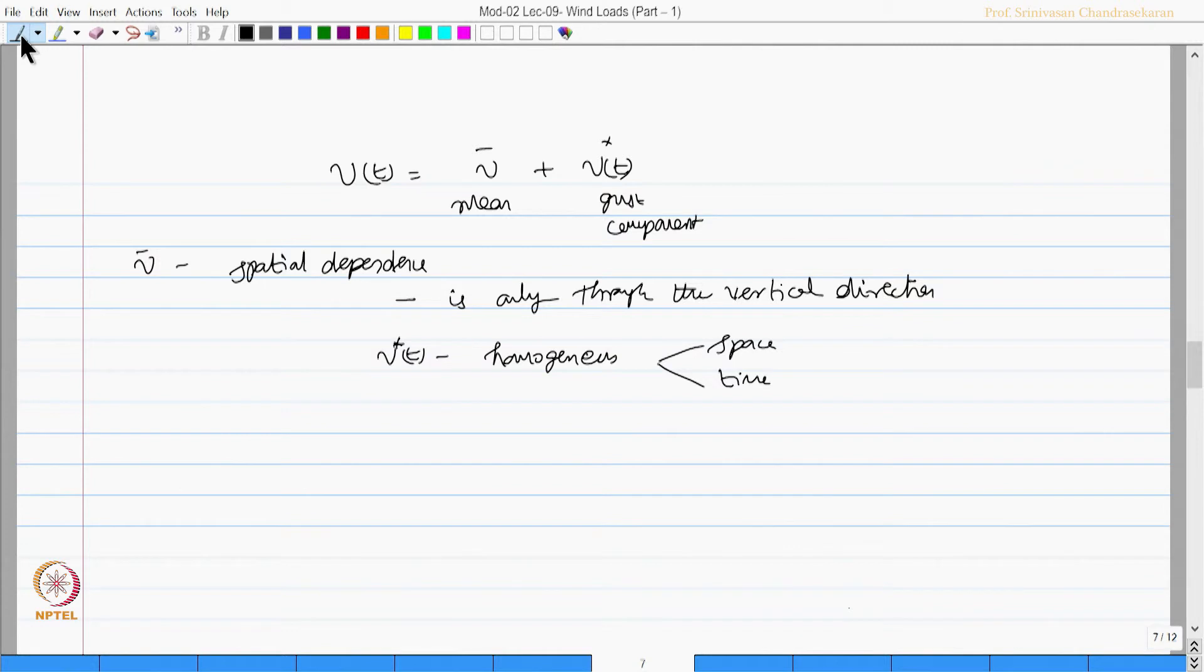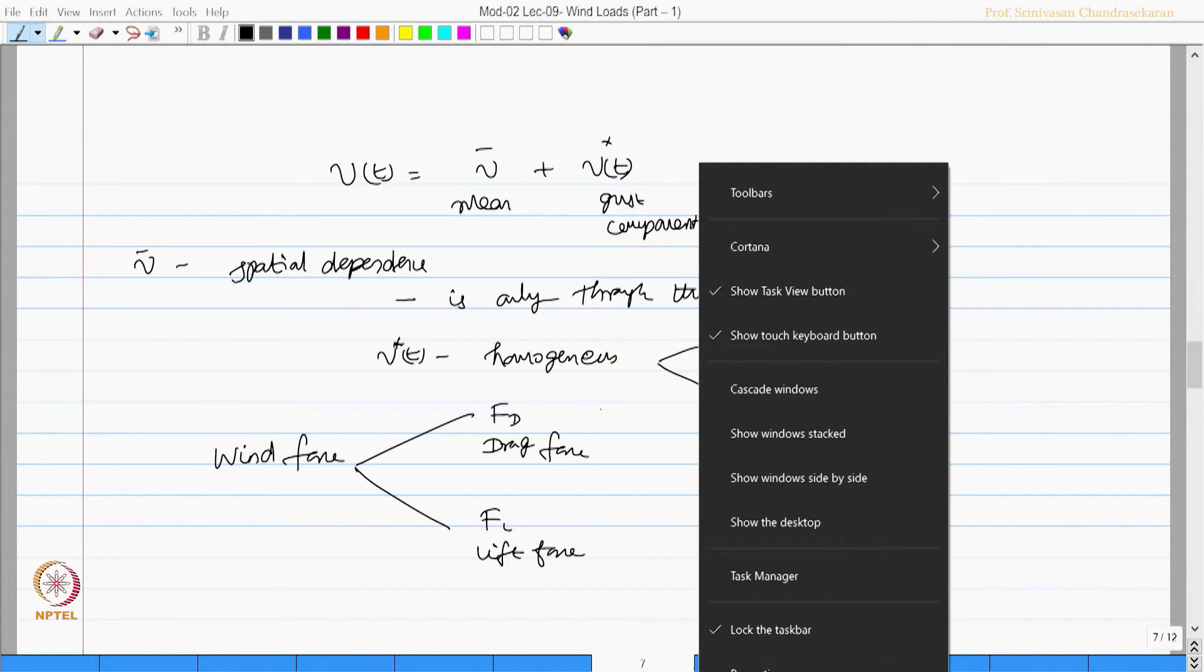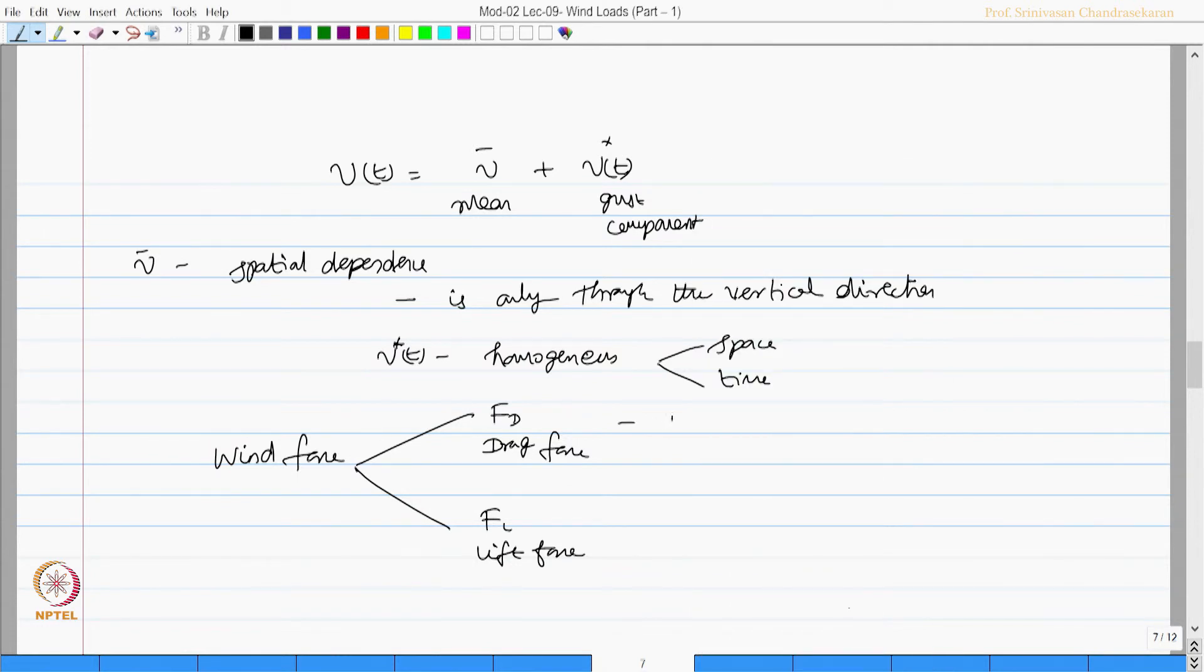Wind force on offshore structure can be calculated by two forces: F_d is the drag force and F_l is the lift force, which happens in the direction parallel to the wind flow. This happens in the direction normal to the wind flow.